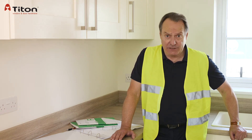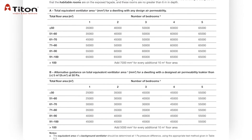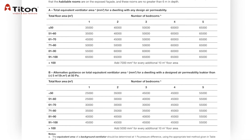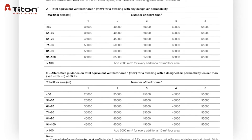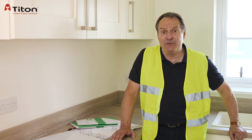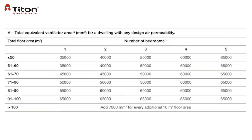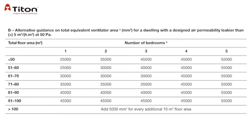The first thing that has to be established before checks can be made is the air tightness level of the property, as Part F uses two different tables to calculate the background ventilation requirement according to the air permeability. Air permeability is checked at 50 Pascals. If it's not known, or tighter than 5 metres cubed per hour per square metre of floor area, then this table is to be referenced. If it's greater — leakier than 5 metres cubed per hour per square metre of floor area — then it's this one, which doesn't require as much background ventilation.